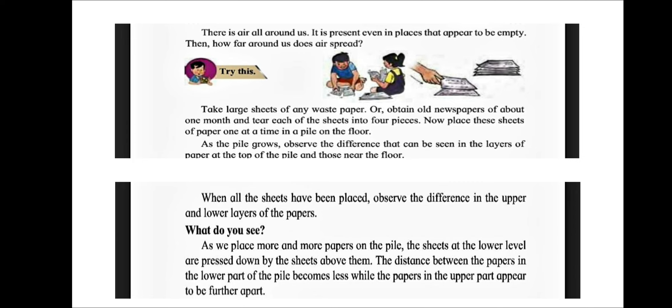As we place more and more papers in the pile, the sheets at the lower level are pressed down by the sheets above them. The distance between the papers in the lower part of the pile becomes less, while the papers in the upper part appear to be further apart.